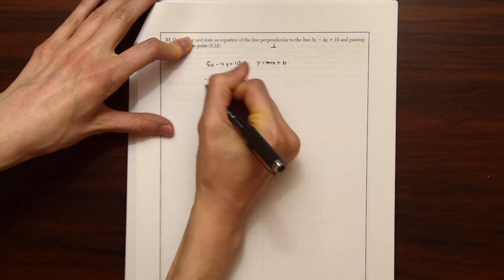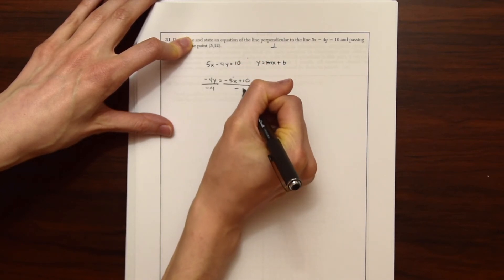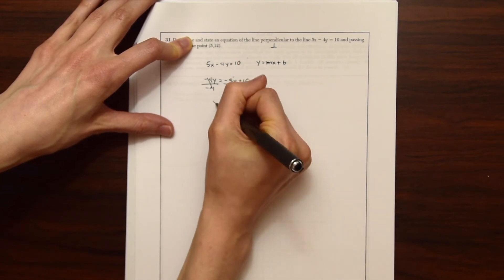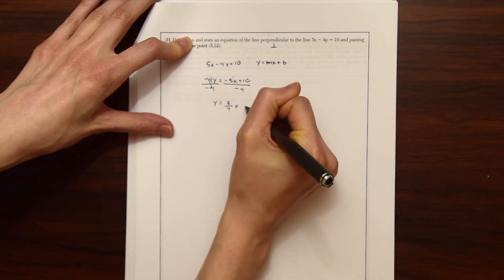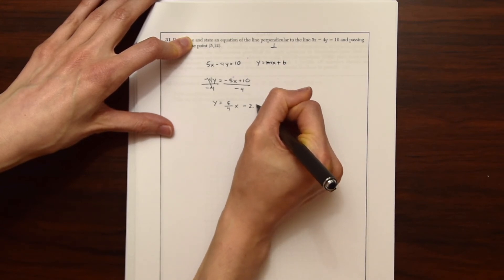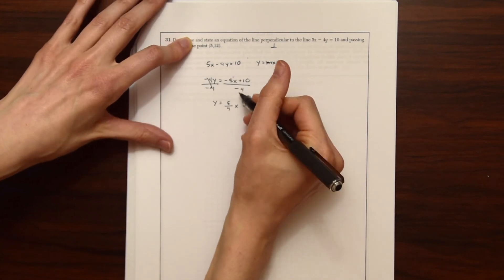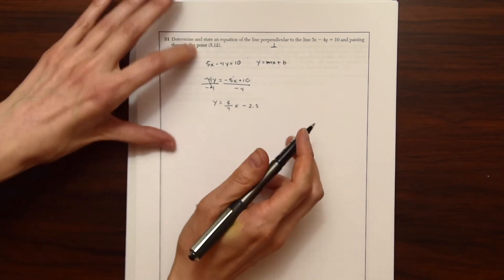So to do that, we're just going to move this 5X to the other side. So we get minus 5X plus 10. And then we want to divide everything by minus 4 to get Y alone. So we get Y equals 5 over 4X minus 2.5.